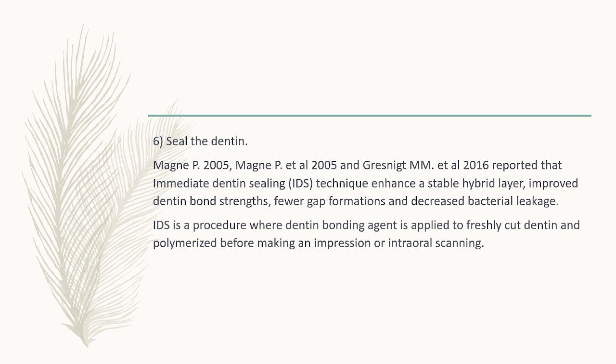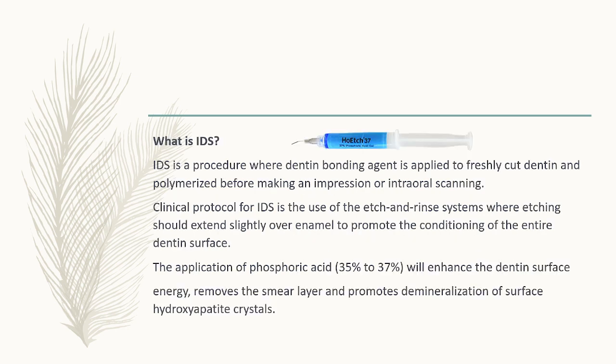Then we seal the dentin. Mey in 2005 and Agatie in 2016 reported that Immediate Dentin Sealing (IDS) enhances a stable hybrid layer and improves dentin bond strength, with fewer gap formations and decreased bacterial leakage. IDS is a procedure where the dentin bonding agent is applied to freshly cut dentin and polymerized before making the secondary impression or intraoral scanning for the CAD-CAM machine.